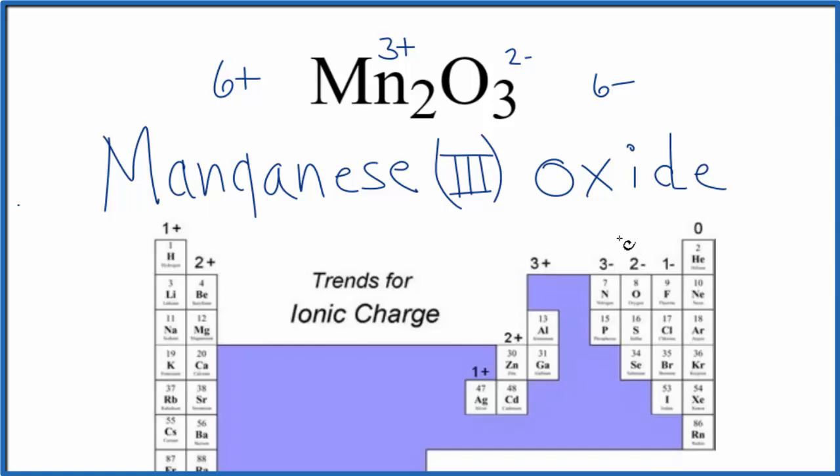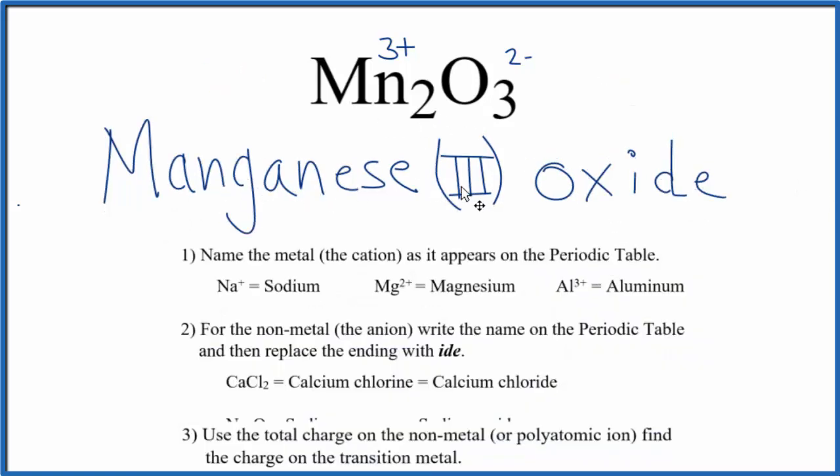That makes the name for MN2O3 manganese three oxide, where the three, that's the charge on each manganese atom. This is Dr. B with the name for MN2O3 manganese three oxide. Thanks for watching.